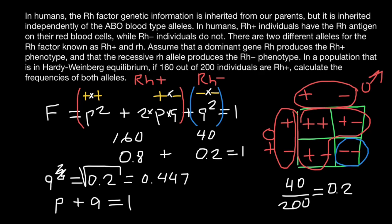And both these two alleles equal to one. And we know the frequency of the q allele, which is 0.447. We can find the frequency of the p allele, which is going to be 0.553.